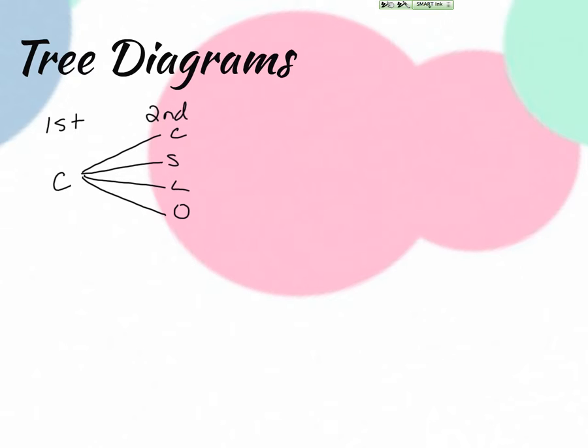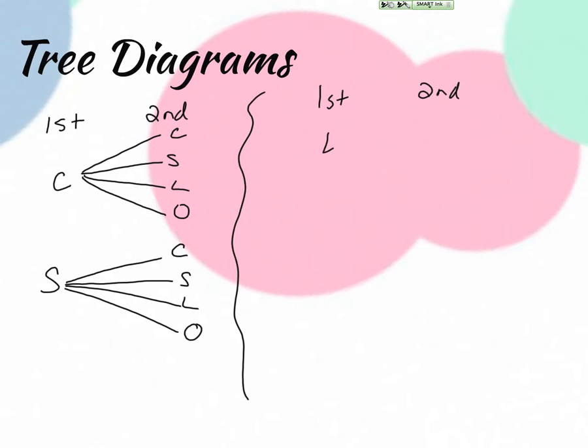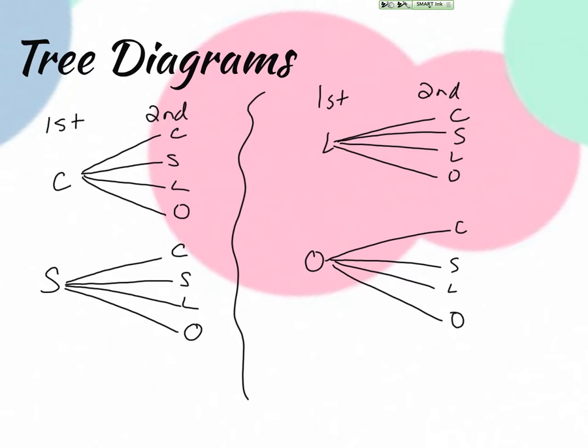And so each branch represents a different thing that could happen. So again, two cherries, cherry, strawberry. Then I've got to do it, if I first pick strawberry, then there's another four things that could happen. And I don't have space to keep going, so I'm just going to start more over here. If I start with a lemon, then I've got four different things that could happen. Again, each branch represents an option of what could happen. And we can see here, we do still have 16 options.